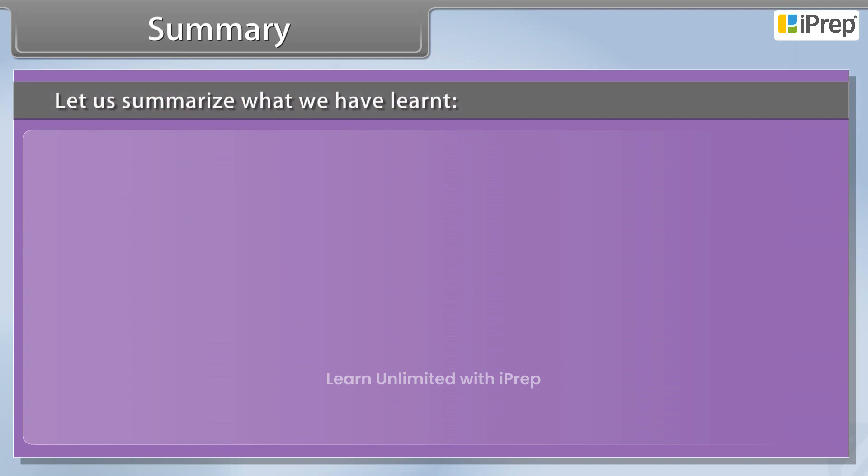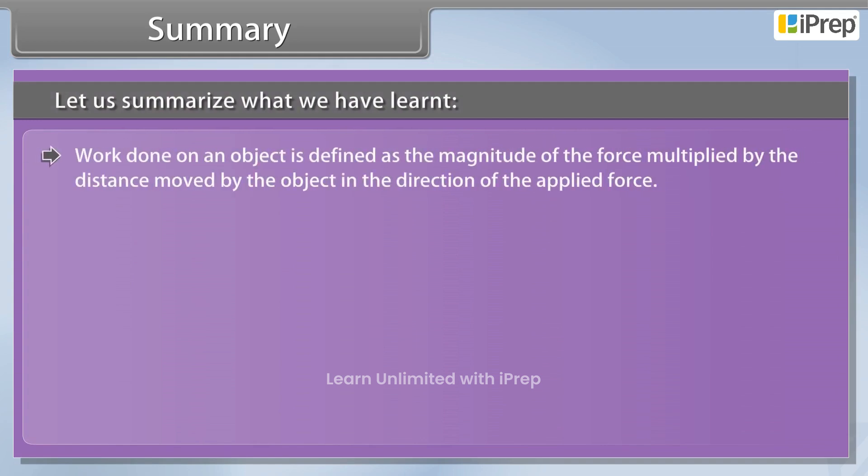Let us summarize what we have learned. Work done on an object is defined as the magnitude of the force multiplied by the distance moved by the object in the direction of the applied force.